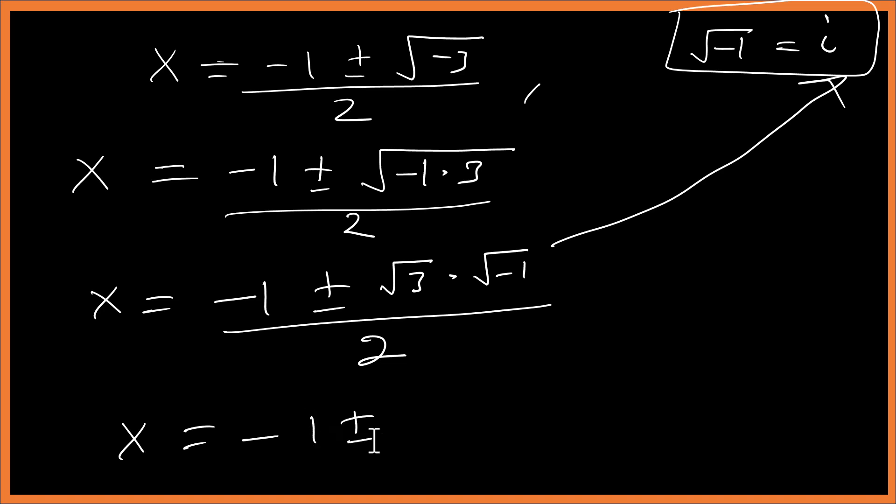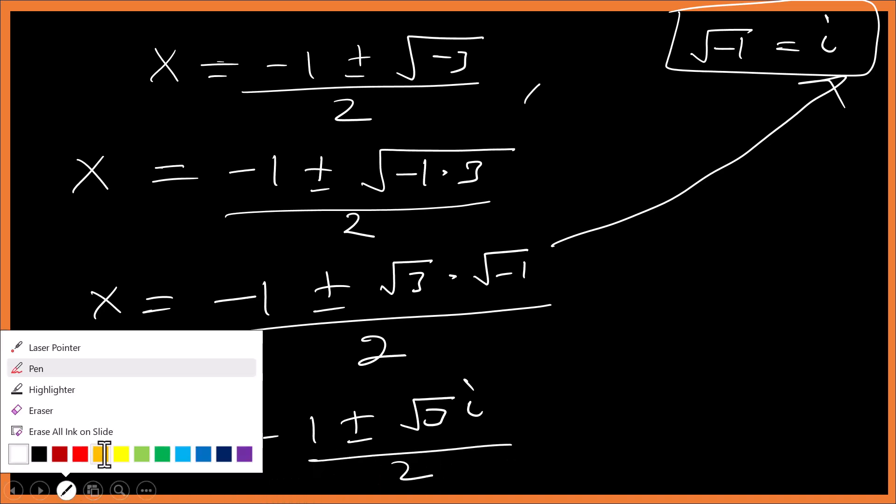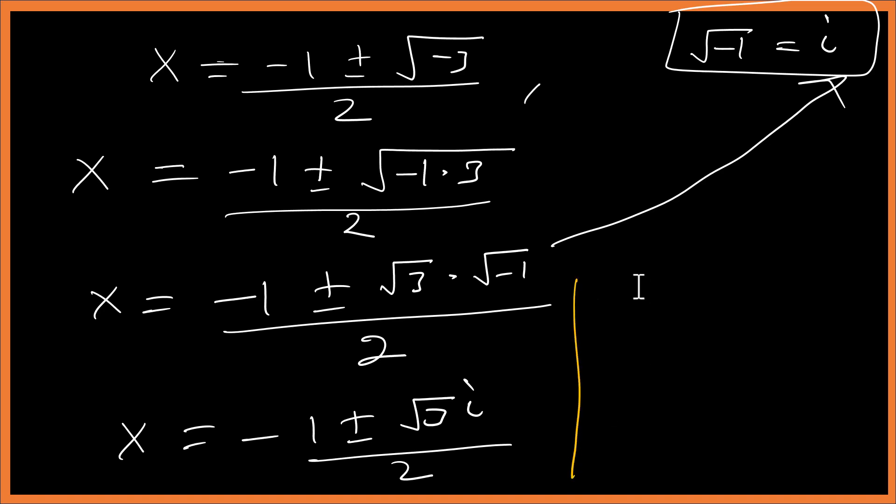So it means the second solution will be minus 1 plus i√3 over 2. The third solution: minus 1 minus i√3 over 2. That's that simple.